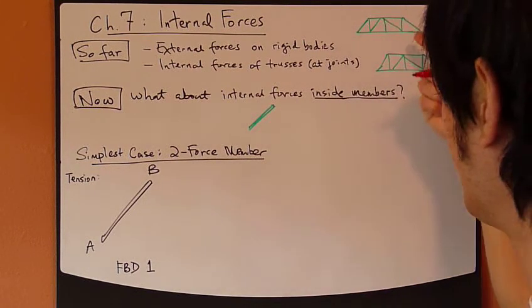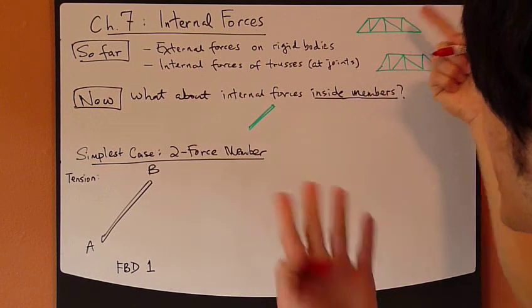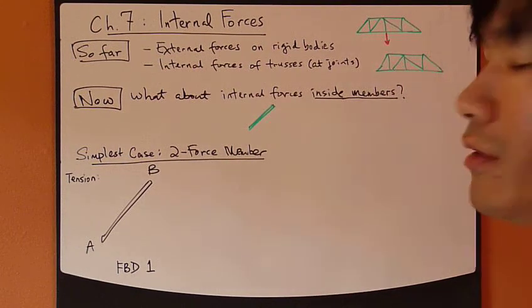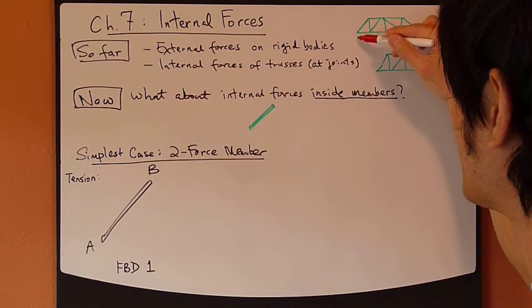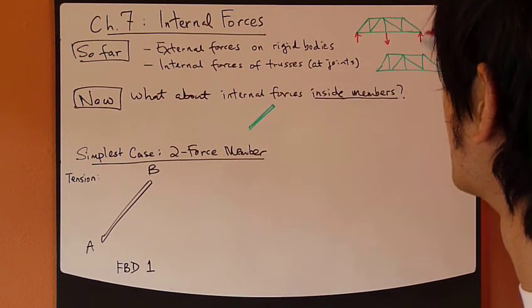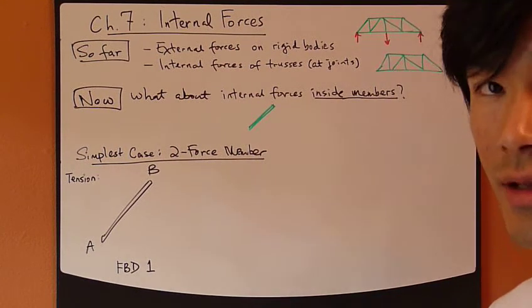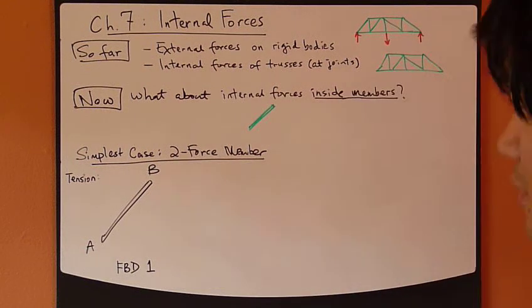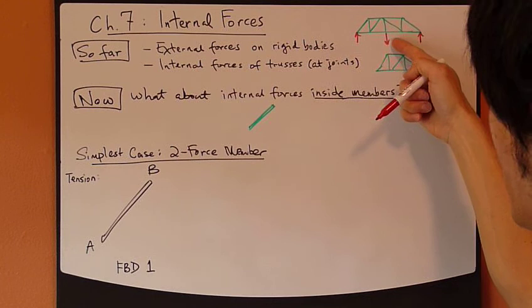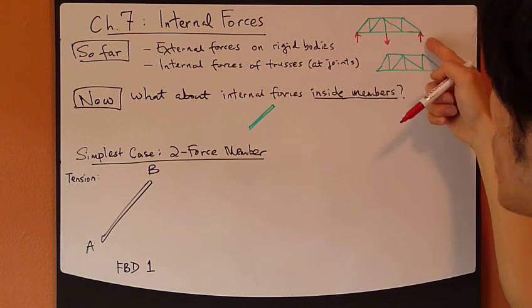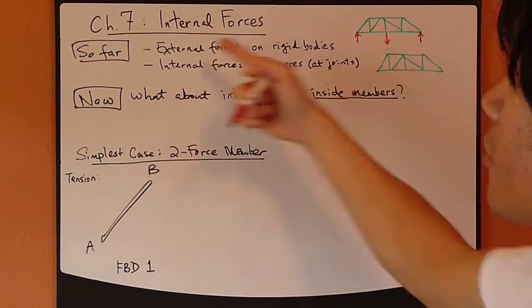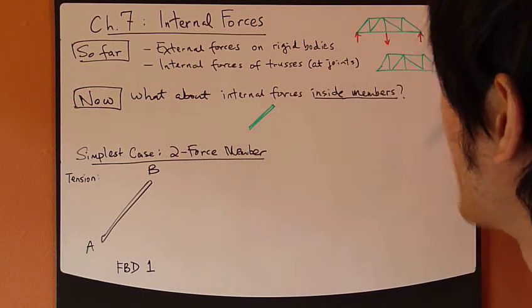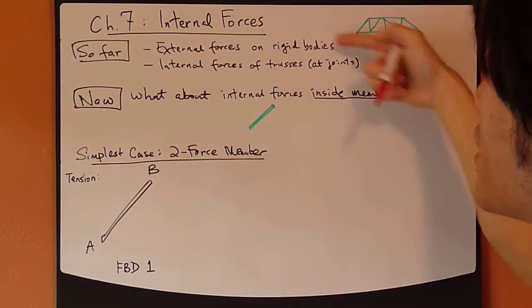For example, a truss like this — you might have a concentrated load applied at the middle joint, and then at the two ends you have the reaction forces. These three forces are external forces: the applied concentrated load and the two reaction forces. So they belong to external forces. This is a free body diagram for the entire truss.